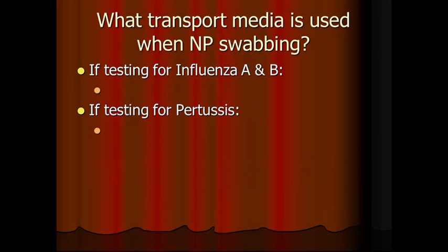What transport media is used for nasopharyngeal swabs? If you are testing for influenza A or B, you would use M4RT because it is viral. For pertussis, this is a bacterium, so you would use Amies with charcoal because it is an anaerobic microorganism.